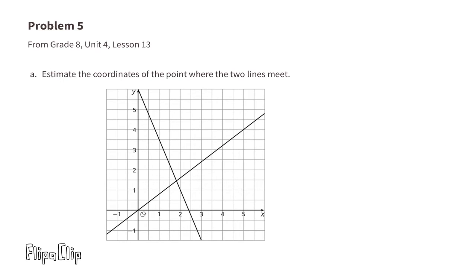Problem number 5. From 8th grade Unit 4 Lesson 13. A. Estimate the coordinates of the point where the two lines meet. You can see where the two lines meet. And if you look down to the X axis, it looks like it's a little bit more than 1 and a half. Maybe 1 and 3 fourths or 1.75. And if you look along the Y axis, it looks a little bit less than 1 and a half. Perhaps 1.4. So my guess would be 1.75 for the X value and 1.4 for the Y value.